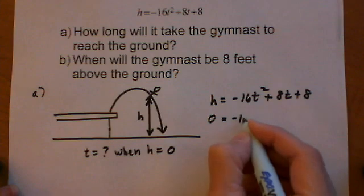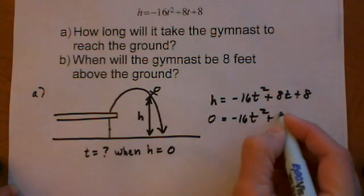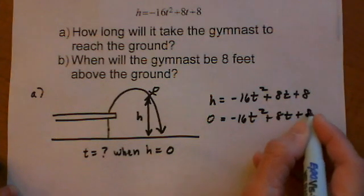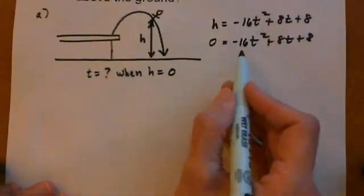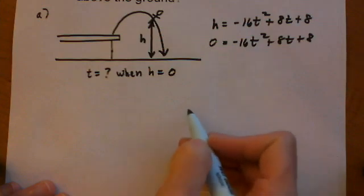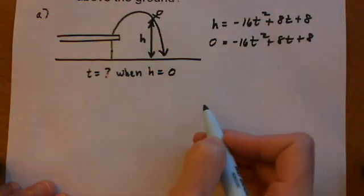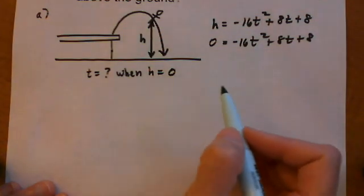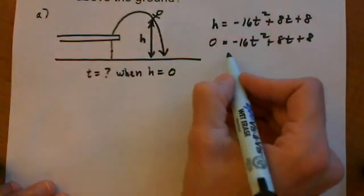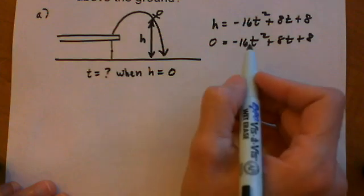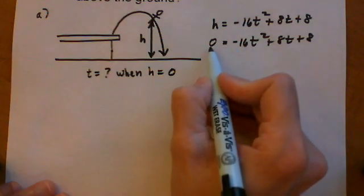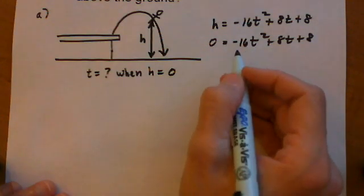0 equals negative 16t squared plus 8t plus 8. Now that we have our equation to solve, we can kind of forget about the word problem and just solve the equation. And then we'll do a reality check and make sure that the answers make sense within the application. This is a quadratic equation that we're going to solve by factoring. Our first step is to make sure the equation equals 0, and it does. And now we're going to factor.